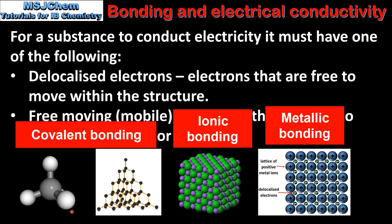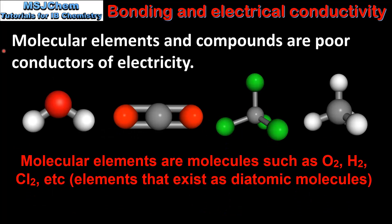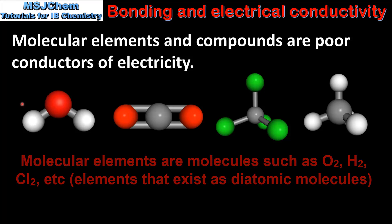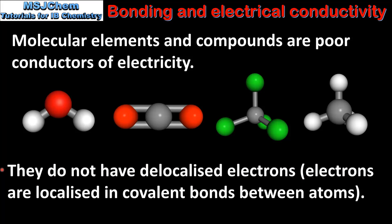Starting with substances that have covalent bonds: molecular elements and compounds are poor conductors of electricity. As seen in a previous video, these exist as discrete molecules with fixed numbers of atoms. The reason for their poor electrical conductivity is that they do not have delocalized electrons — the electrons in the molecules are localized in covalent bonds between the atoms.